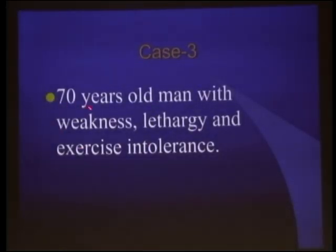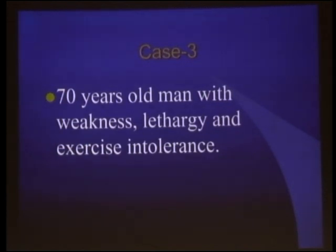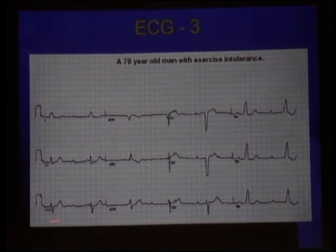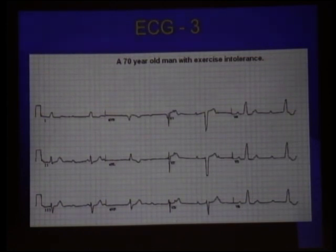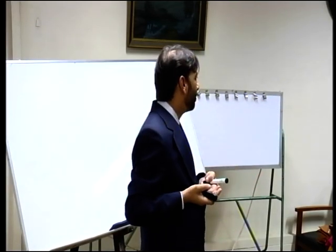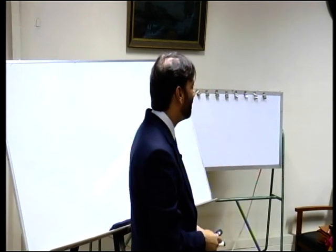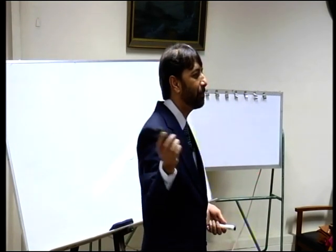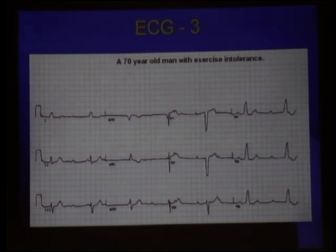70-year-old man with weakness, lethargy, and exercise intolerance. Looking at previous prescriptions from GPs — all kinds of multivitamins. Baba ji has weakness and lethargy — here, eat this, take that. Nobody examined him: what is the pulse? What is the blood pressure? There was bradycardia on pulse, and ECG showed complete heart block — chronotropic incompetence. After finding bradycardia, the ECG confirmed the block. He had never been admitted, no cardiac history — it was degenerative block. His life had been miserable for 2 years: walking a little, getting tired, sitting down, on multivitamins. A pacemaker completely changed this patient's life.